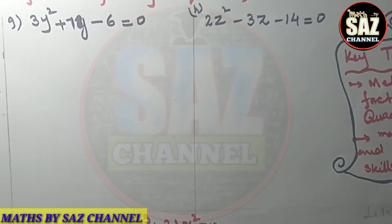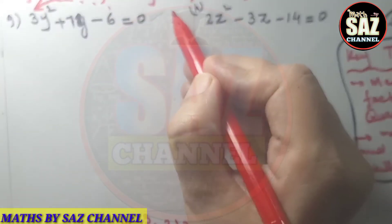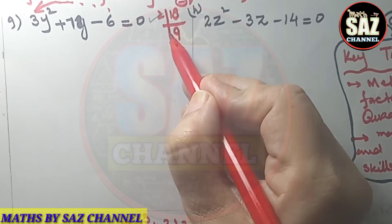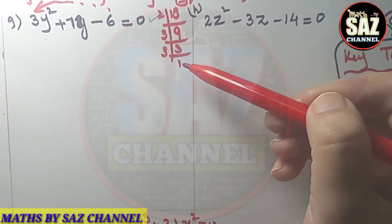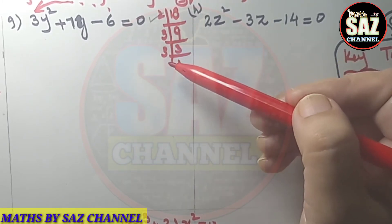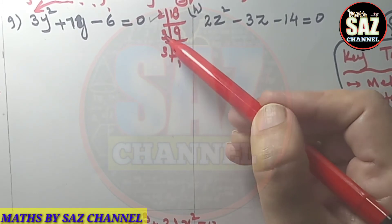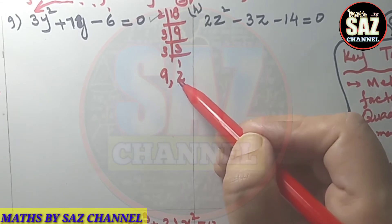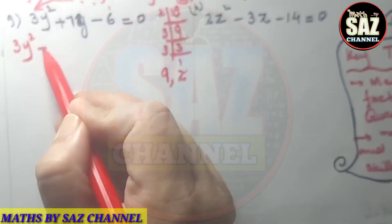I hope you are clear about that question. Moving to the next: part g is 3y² + 7y - 6 = 0. Again, multiply the constant with the coefficient of the term having power 2: 6 × 3 = 18, with a minus sign. Quickly make the prime factors of 18: 2 × 9, then 3 × 3. We need factors such that their difference gives 7 and product gives 18. Taking 9 and 2: 9 - 2 = 7 and 9 × 2 = 18. This is the suitable choice.